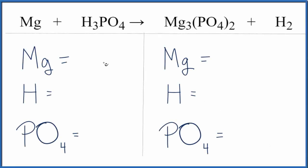In this video, we'll balance the equation Mg plus H3PO4 gives us magnesium phosphate plus hydrogen gas.